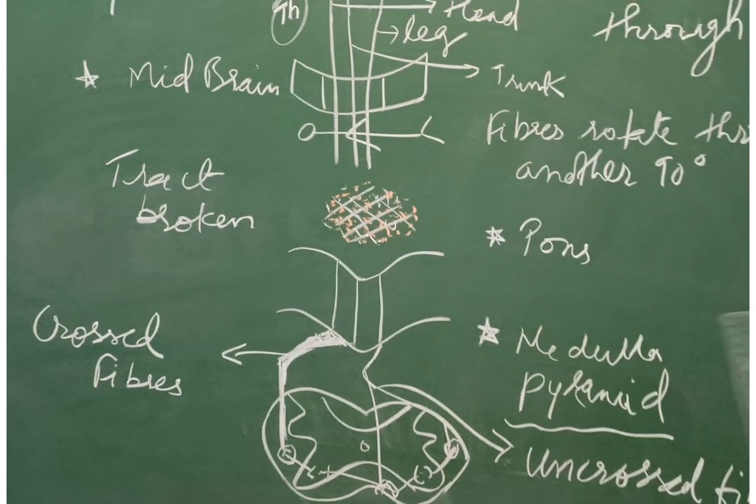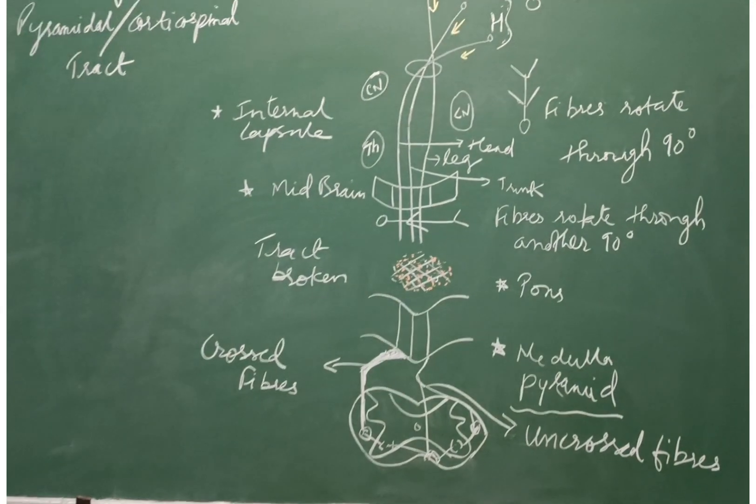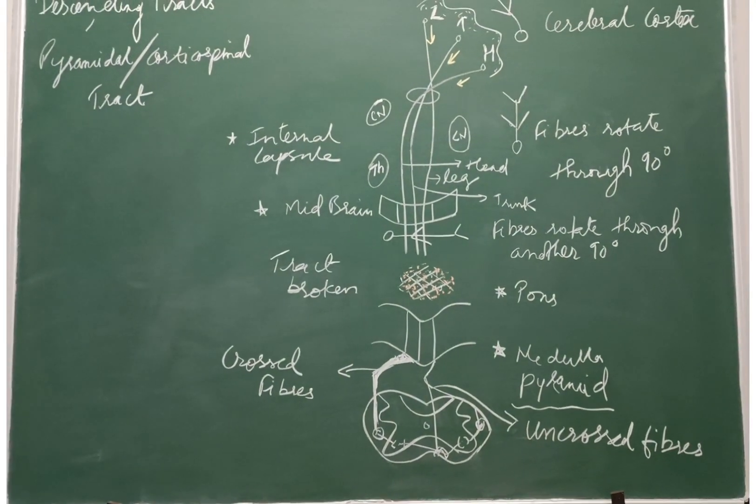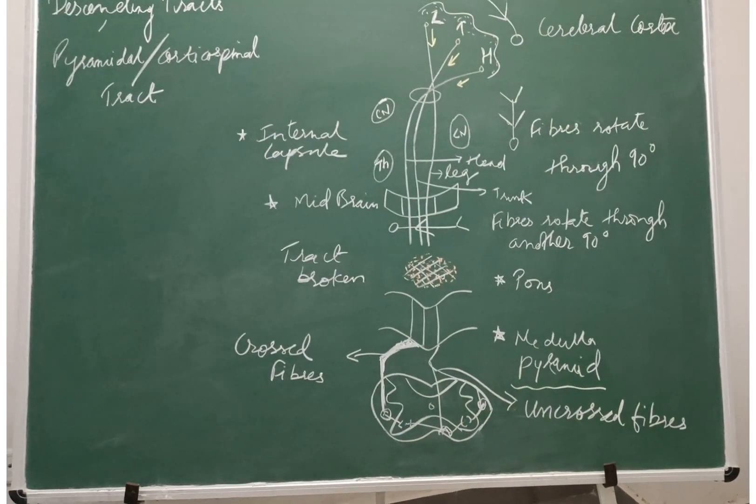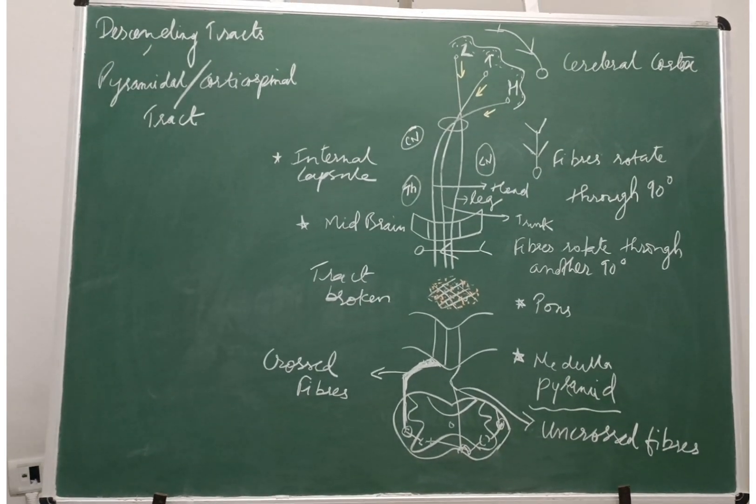Ultimately, the fibers terminate on the motor neurons in the anterior horn cell of the spinal cord, and their axons supply the various parts of the body. The functions: all the voluntary muscles are supplied by pyramidal tract.